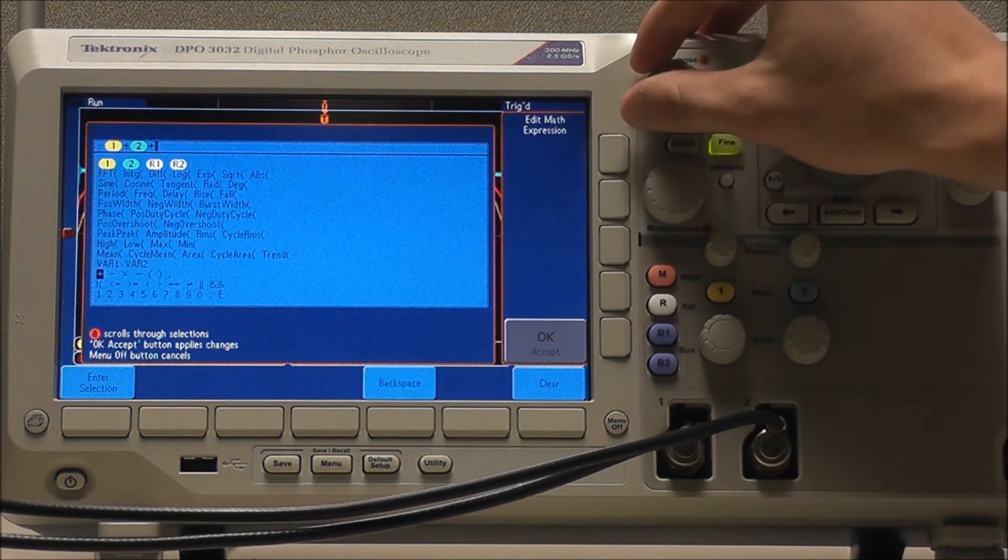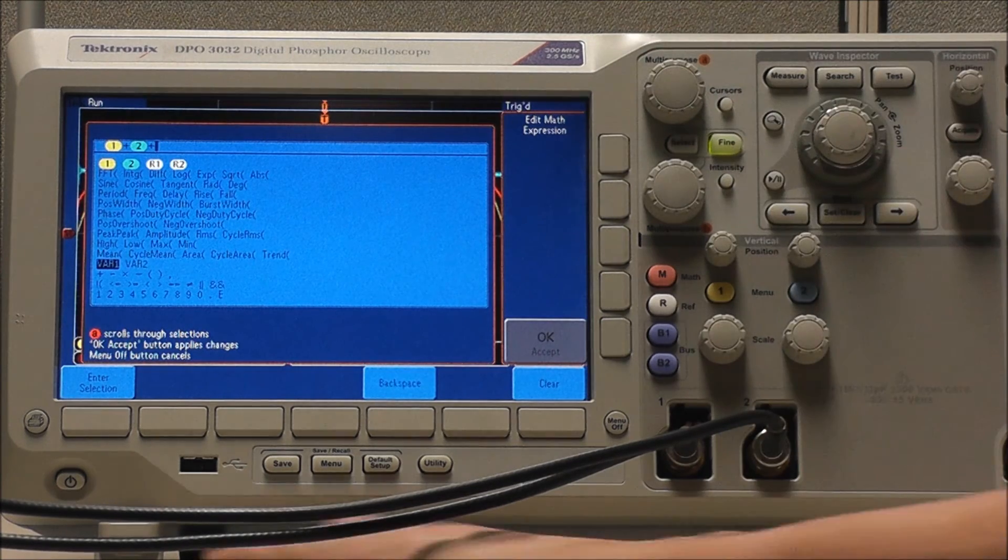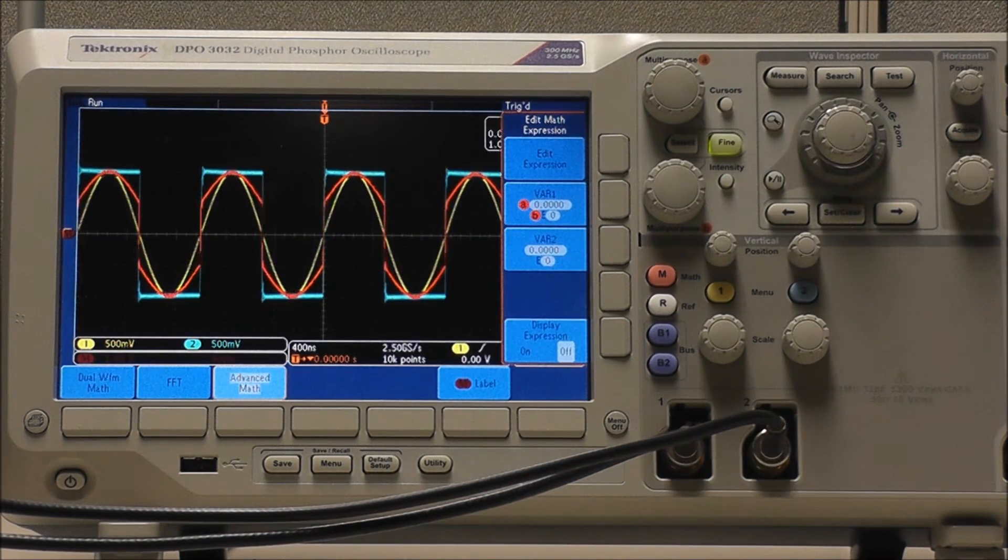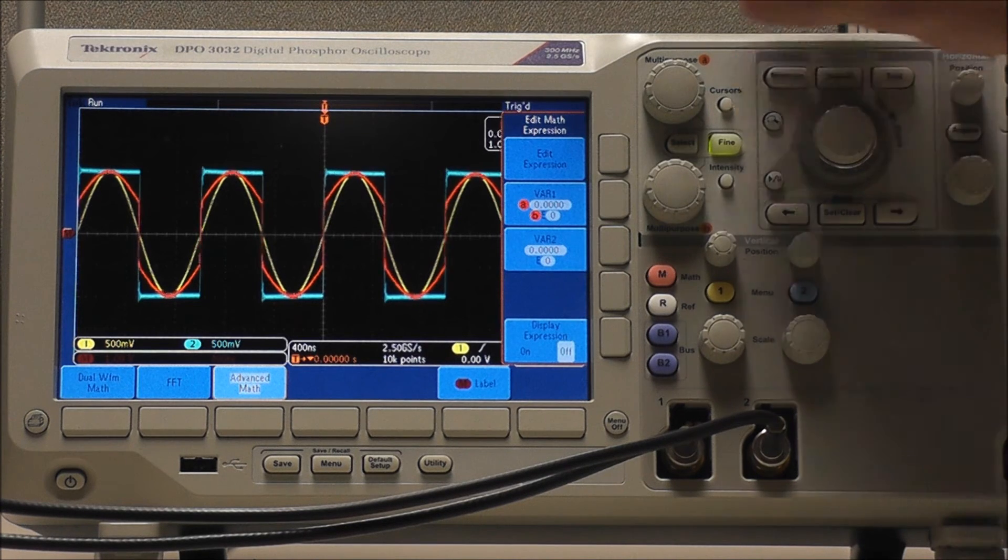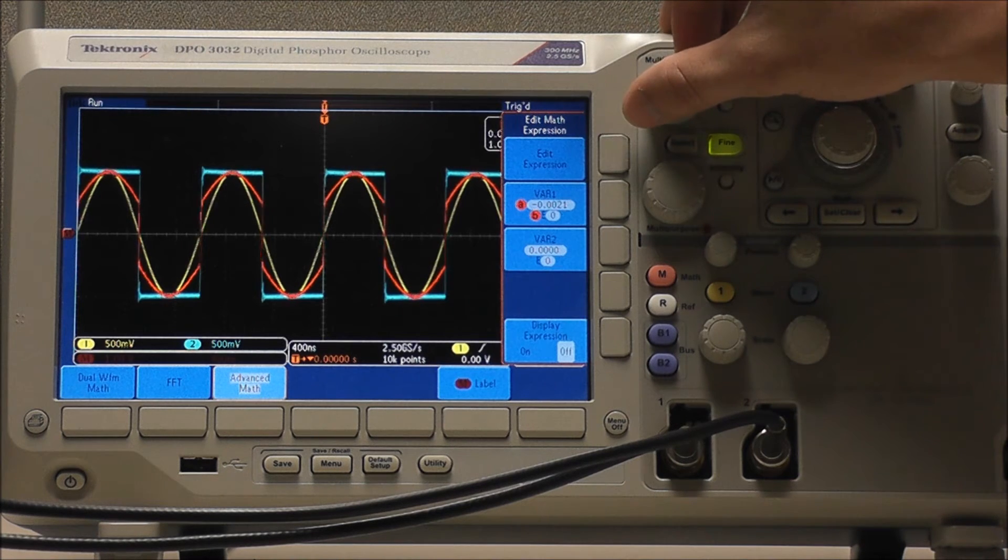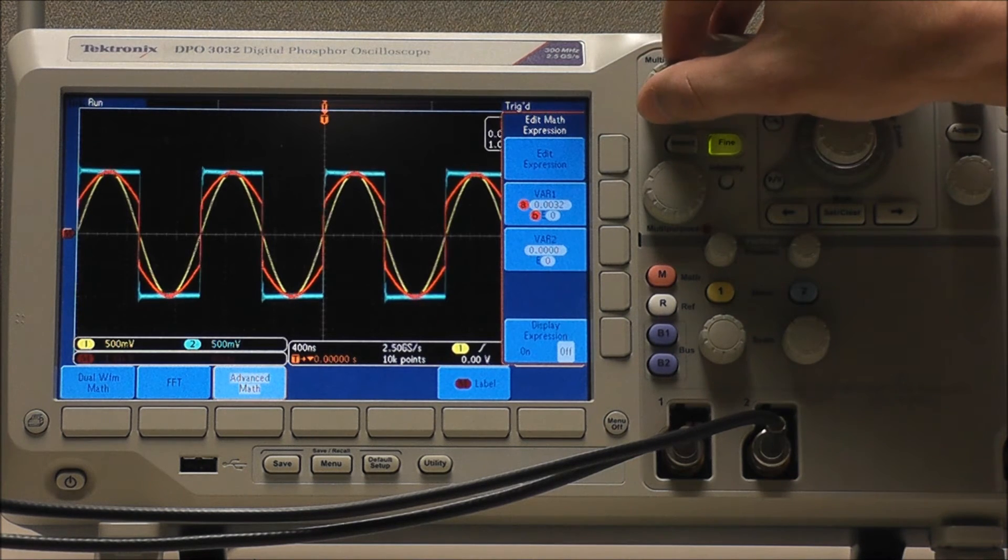It even allows us to incorporate integers and other constants and variables. Our variables will be expressed in scientific notation. Selecting either variable 1 or variable 2, we can use multipurpose A to select any value between negative 10 and 10, out to four decimal places.